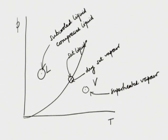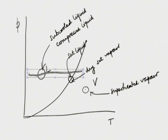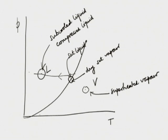It is subcooled because if you go along the isobar, that would be the saturated liquid — you have reduced the temperature, so it is subcooled. Or you could consider a liquid at the saturated liquid point, compress it, and bring it to that point. So subcooled liquid and compressed liquid mean the same thing.